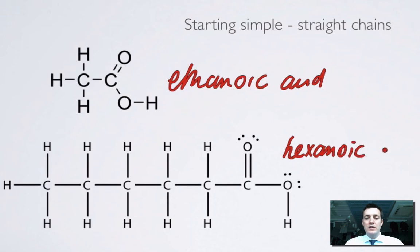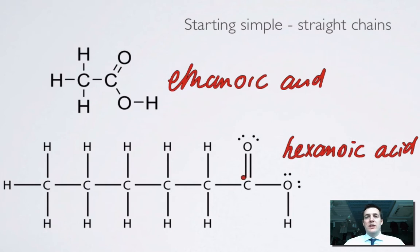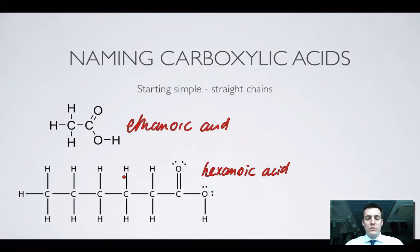You might be wondering whether it's important to specify where the functional group is in the molecule. Well, it can only ever be on the end, so you don't really need to say anything about that. Some molecules will actually have a carboxylic acid at both ends, and then we do need to specify it, but I won't worry about that at this stage.